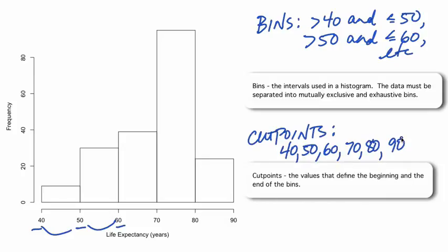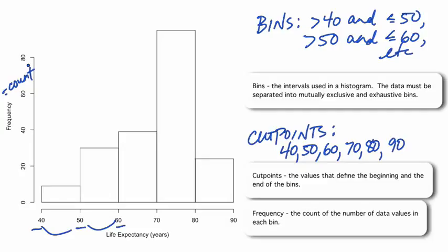The vertical axis in our histogram is the frequency, or count, of the number of data values in each bin. We draw touching bars for each bin up to the frequency of that bin. Note that we can't read the actual data values from a histogram. From our first bin, we know that there are 9 countries or territories with life expectancies greater than 40 years and at most 50 years. But we can't tell from the histogram what the exact value of the minimum life expectancy is.